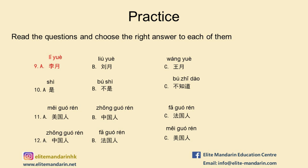Let's check the answers together. The first key sentence is 我叫李悦,我是老师, which means my name is 李悦, I am a teacher. The question is 他叫什么名字? which means what's her name? So the correct answer is A, 李悦。